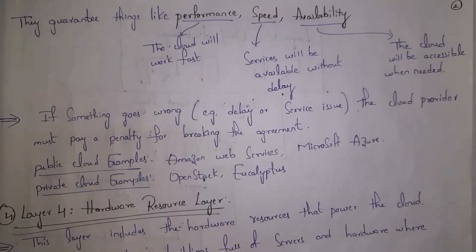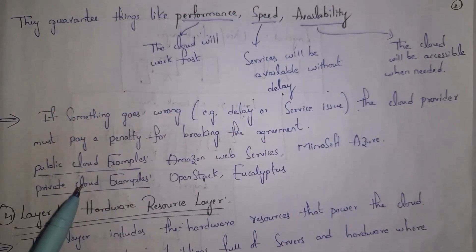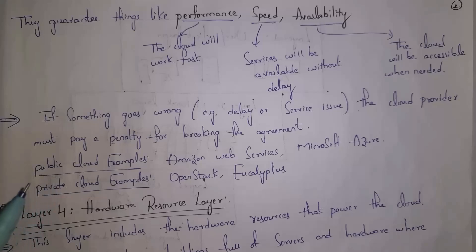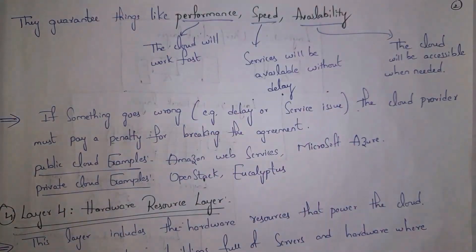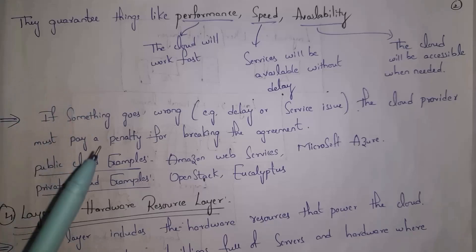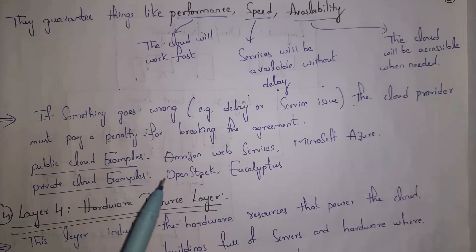The cloud management layer directly affects service level agreements (SLAs) — agreements between users and cloud providers. In an SLA, cloud providers guarantee three things: performance, speed, and availability. Performance means the cloud will work fast; speed means any service will be available without delay; and availability means all cloud resources are accessible whenever needed. If something goes wrong, the cloud provider must pay a penalty. AWS and Microsoft Azure are examples of public cloud; OpenStack and Eucalyptus are examples of private cloud.